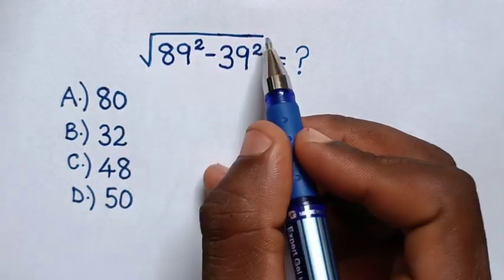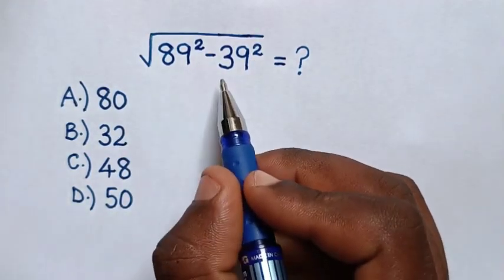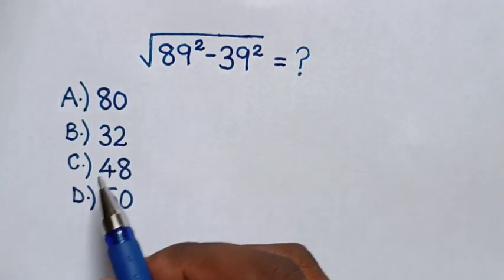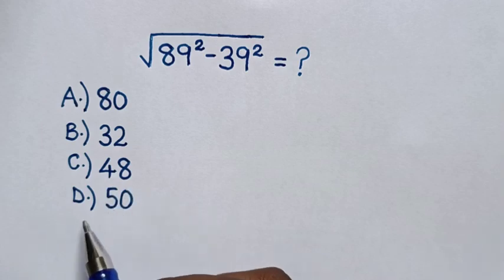Hello, how to solve square root of 89 square minus 39 square by selecting the answers: A) 80, B) 32, C) 48, D) 50.